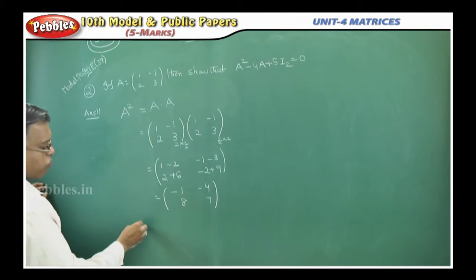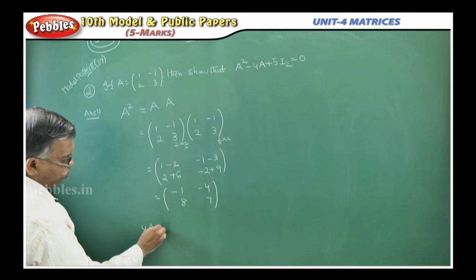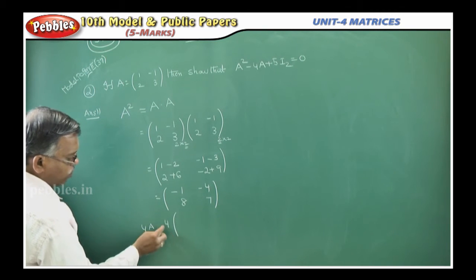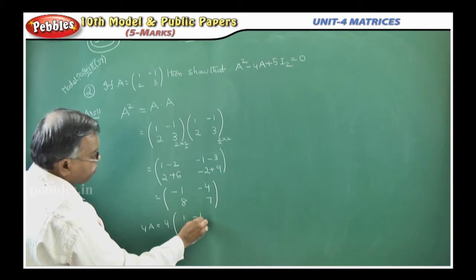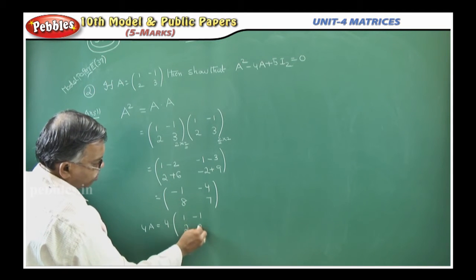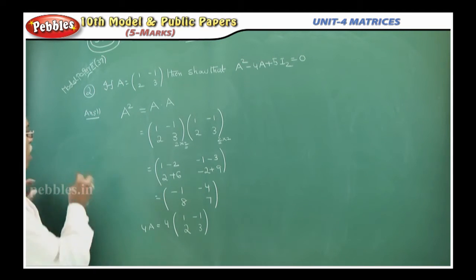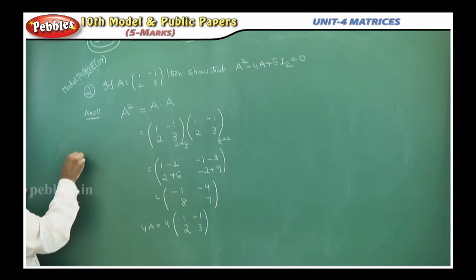Next we have to find 4A. 4A means 4 into matrix A. What is the matrix? A is 1, minus 1, 2, 3. It is of the form KA. What is KA means? Any scalar quantity.